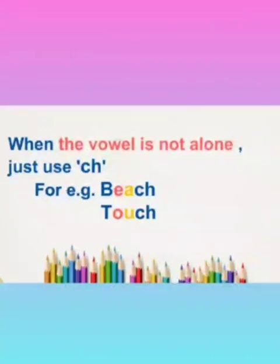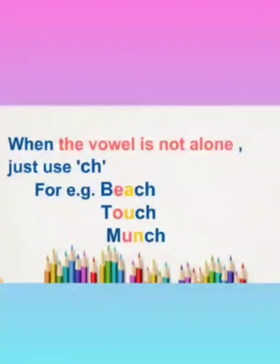See another example. The word is munch. Now see, after the vowel u there is a letter friend n, so we use ch with it.